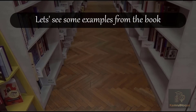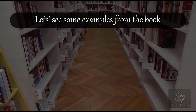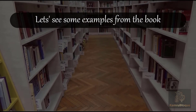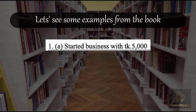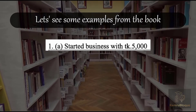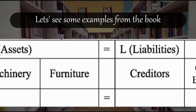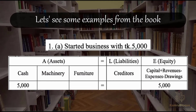Let's see some examples from the book. Number one: start a business with $5,000. The cash comes in as a result of the investment of $5,000.